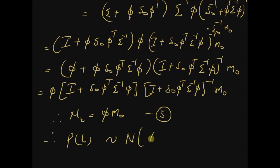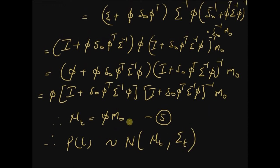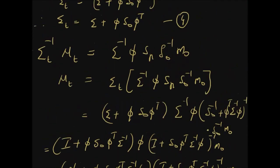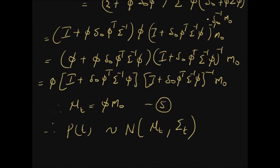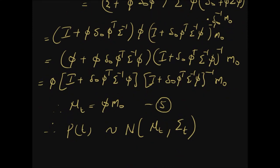Therefore the evidence function p(t) follows a normal distribution with mean μ_t = φ m₀ and covariance matrix σ_t = σ + φ S₀ φᵀ. Thus we can use the trick of completing the square to determine both the posterior density and the evidence density. Thanks for watching.